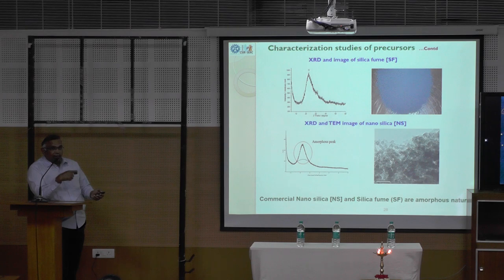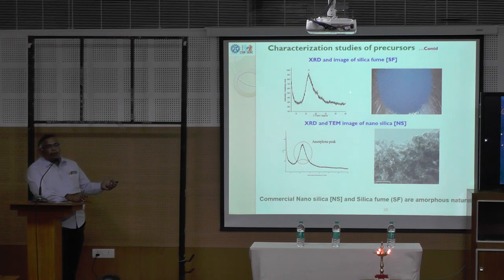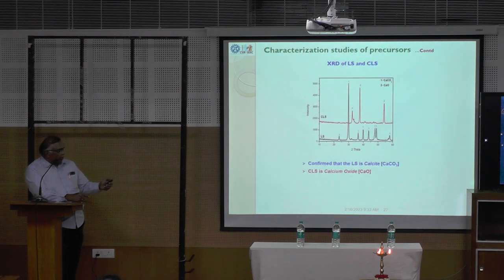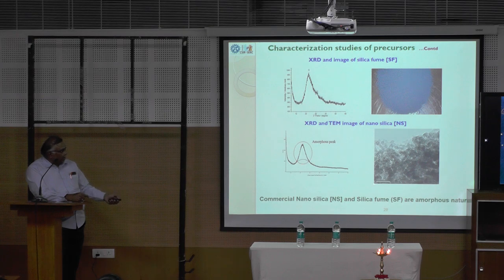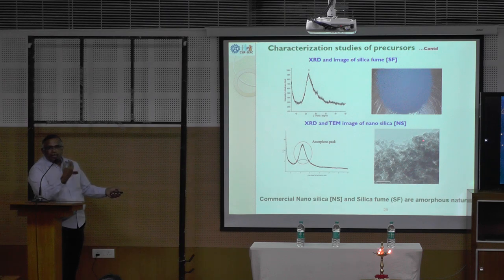I said CLS, and silica fume and nano silica. These peaks we call amorphous. Amorphous materials are highly reactive. Whereas crystalline materials — the sharp peaks you are seeing — are not so reactive. These two are very amorphous, with broad peaks from X-ray diffraction. And you can see here, this scale is in nanometers. The nano silica you are seeing is a silica atom through transmission electron microscope. Using this, we can see at atomic scale.